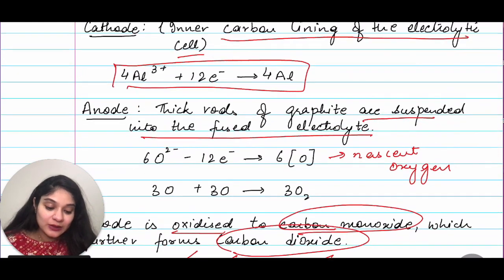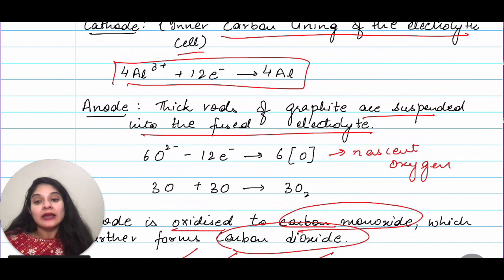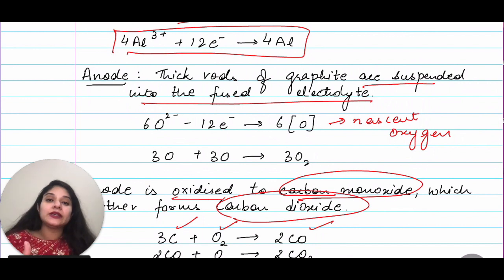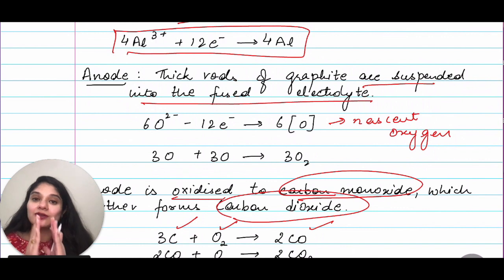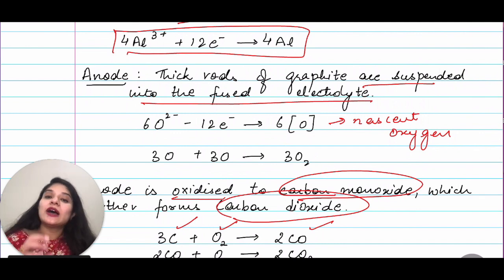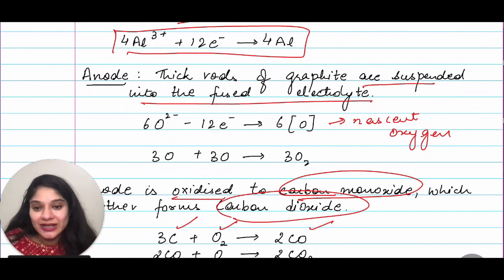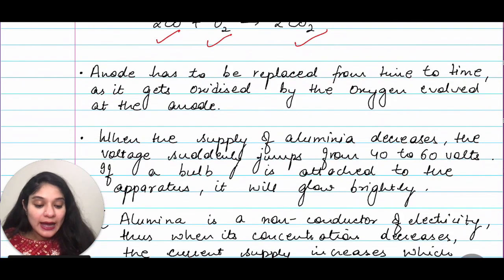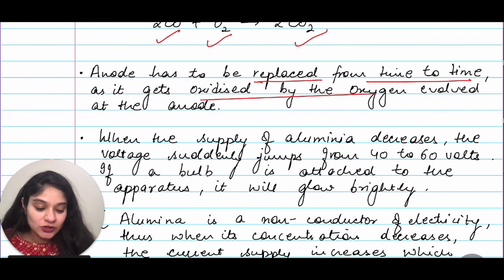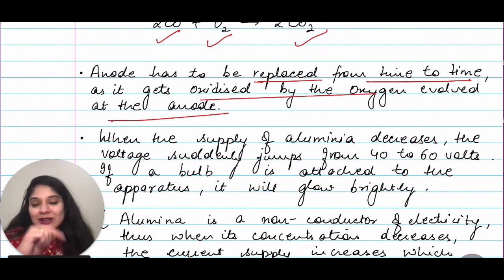Since oxygen keeps reducing carbon from the graphite rods, eventually you have to change the graphite rods because they become thinner and thinner. Once they become too thin, electrolysis would stop and you won't get sufficient products. So as the process goes on, once in a while you have to change those graphite rods. The anode has to be replaced from time to time as it gets oxidized by oxygen evolved at the anode.